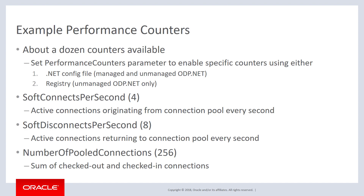The types of counters you can monitor include soft connects per second, soft disconnects per second, and number of pooled connections, each identified by a numeric value. To monitor soft connects per second, set the performance counters parameter to 4; soft disconnects per second is 8; number of pooled connections is 256. To monitor soft connects and disconnects together, set it to 12 (4+8). To monitor all three, set it to 268 (256+8+4).